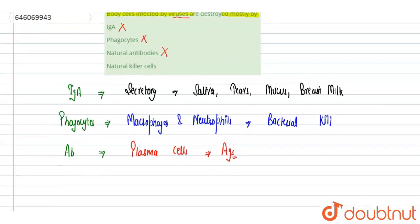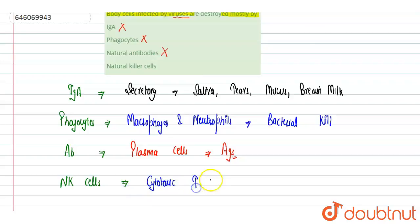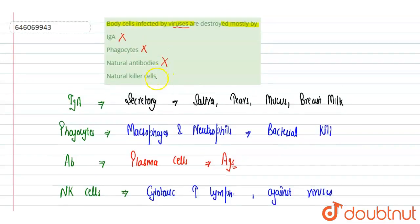have Natural Killer Cells. So natural killer cells - these are cytotoxic T lymphocytes. Cytotoxic T lymphocytes are effective against viruses. They protect the body against viruses - they are highly effective. So we can say that this is an important key player which has a defense mechanism against viruses. So this is